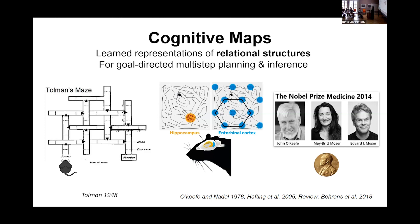Thirty years after that, John O'Keefe discovered hippocampal place cells — or place fields, depending on your method of measuring. These cells fire whenever the animal passes a particular location in the hippocampus. Then 30 years after O'Keefe, the Mosers discovered entorhinal grid cells that fire in a hexagonal pattern in the entorhinal cortex.